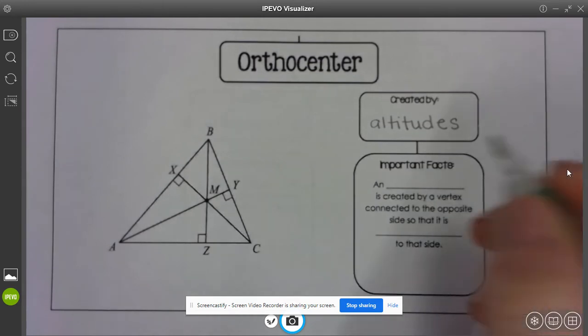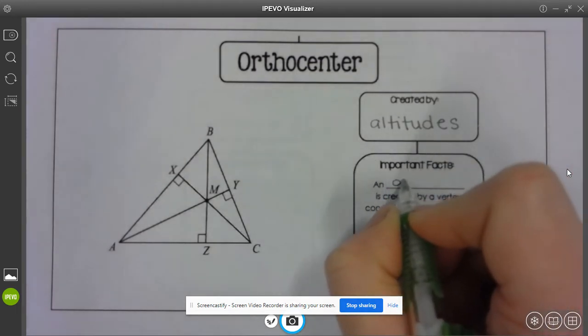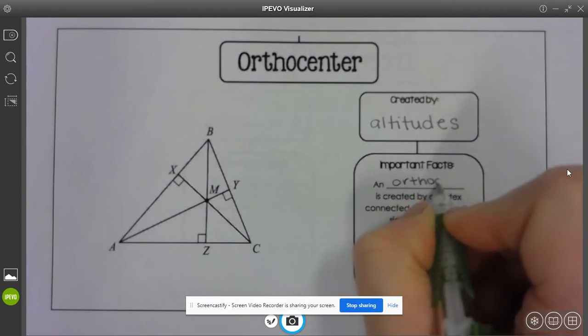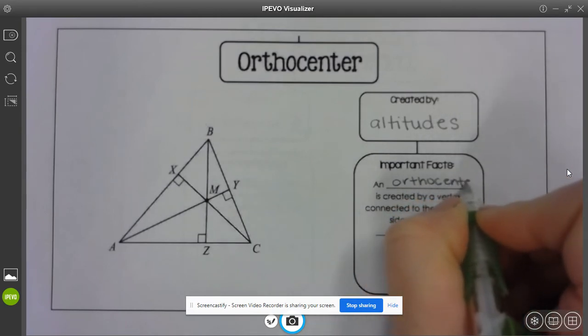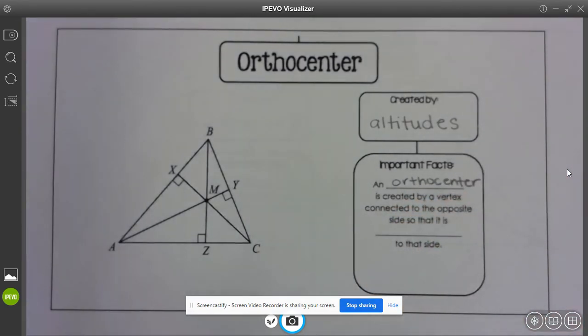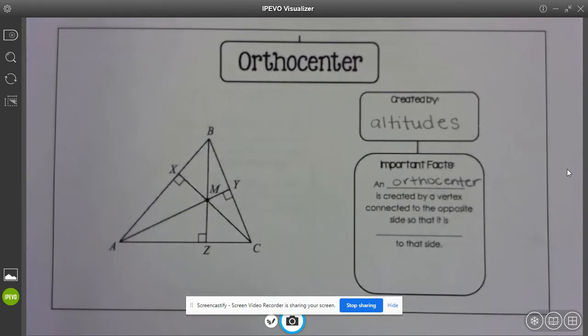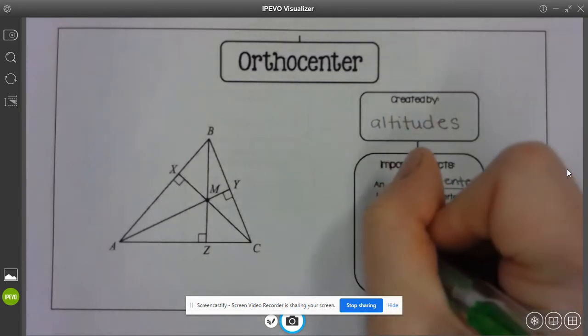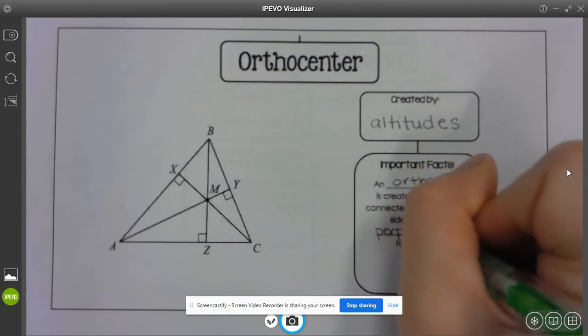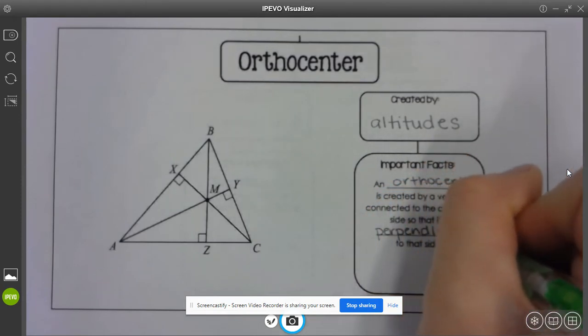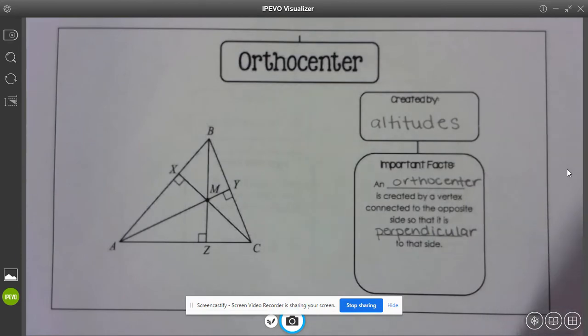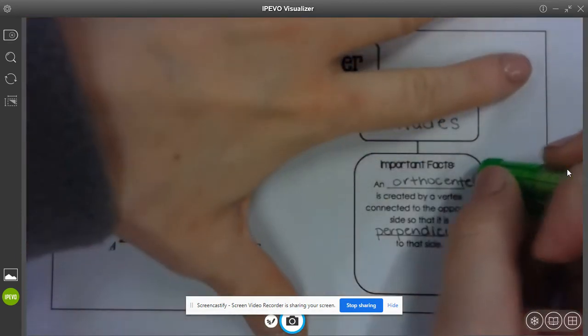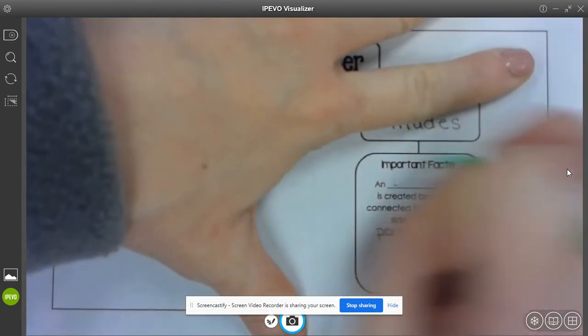All I see is this perpendicular sign, so that tells me these are created by altitudes. So the orthocenter is created by a vertex connected to the opposite side so that it is perpendicular to that side.